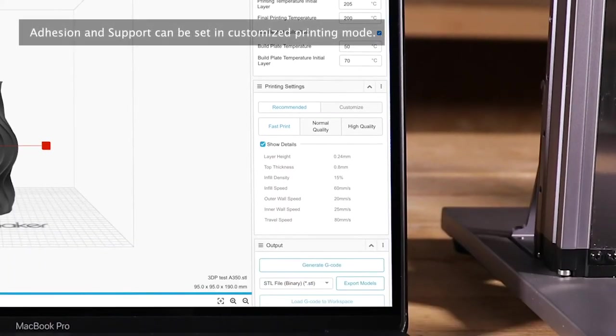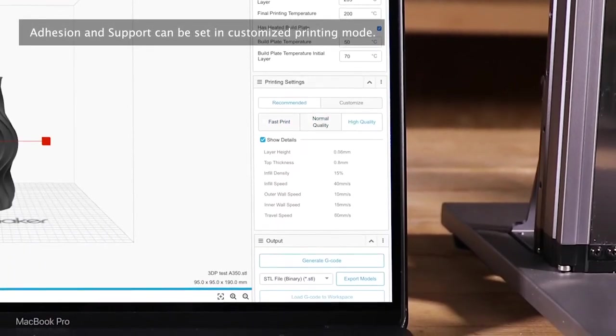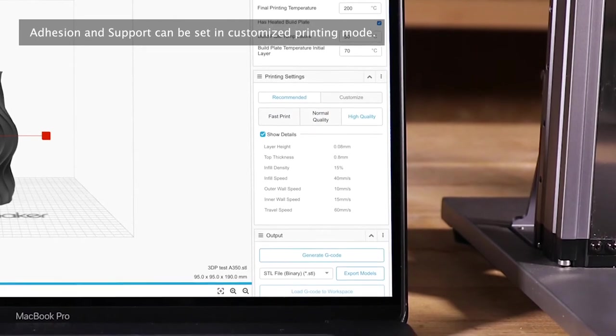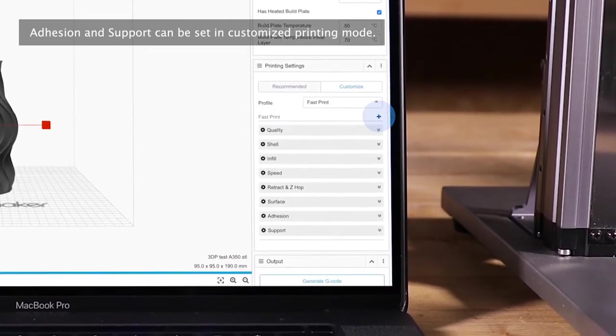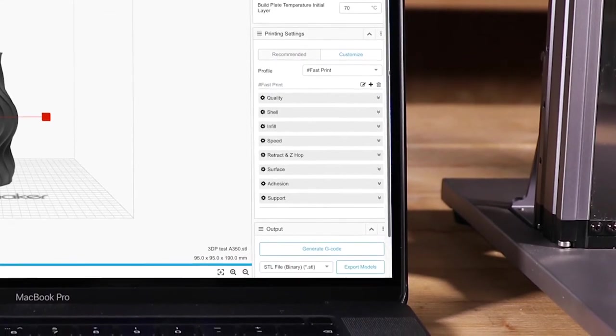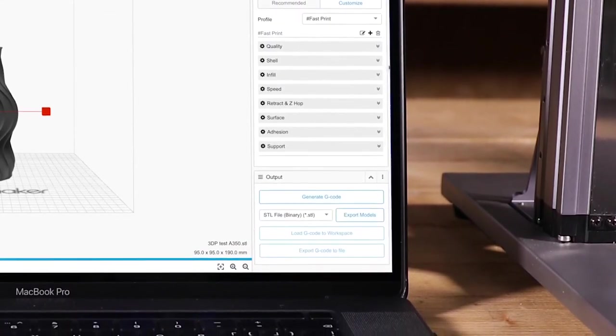For the part of printing settings, 3 recommended modes are provided. You can also enter the customize area. Choose one mode as a basis and click plus button to create your own profile. Then every parameter can be set as needed.